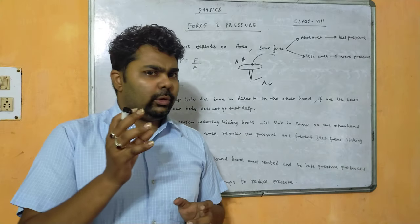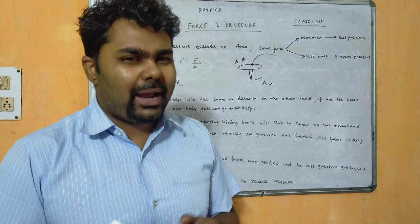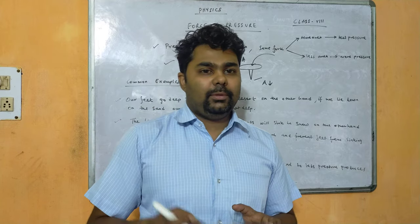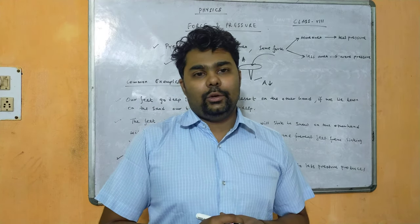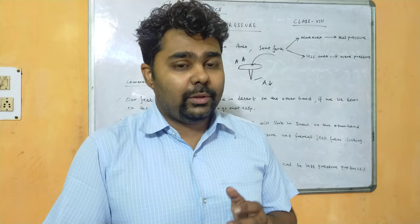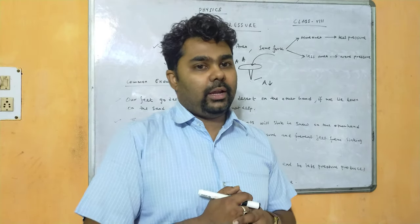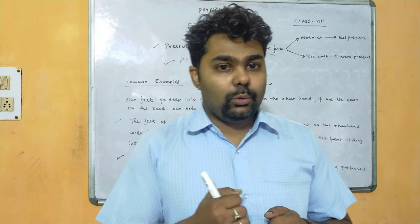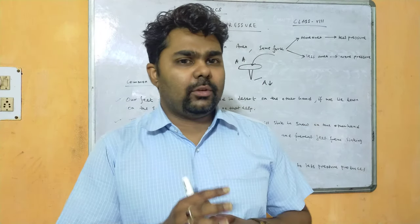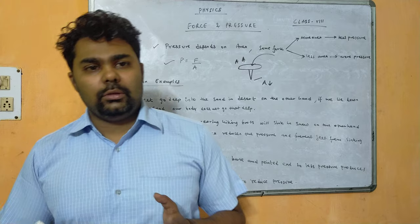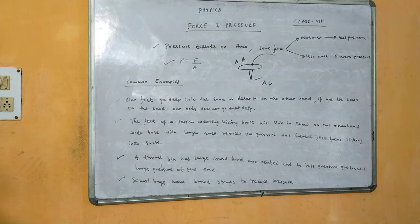Another example: bicycle tires. If the tire is not fully inflated, there is insufficient air pressure and you have to apply more effort to ride. When the tire is fully pumped, it is easier to ride. In every example we see, pressure is inversely proportional to area — if area is more, the pressure exerted will be less.